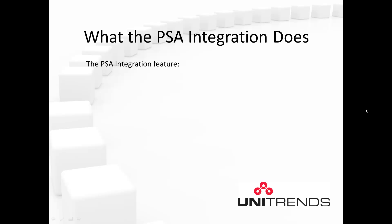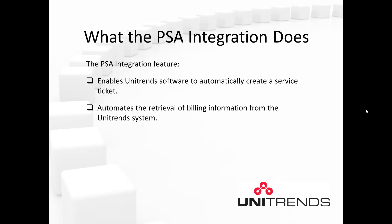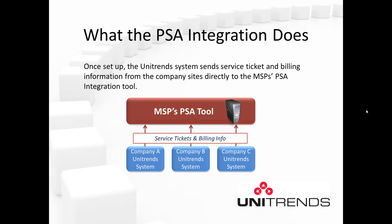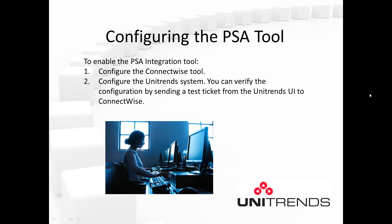Note that billing tickets show up as service tickets in the PSA tool and contain information required for billing. The PSA integration feature enables Unitrends software to automatically create a service ticket and automates the retrieval of billing information from the Unitrends system. Once set up, the Unitrends system sends service ticket and billing information from the company's sites directly to the MSP's PSA integration tool. Enabling the PSA integration is two steps: first, configure the ConnectWise tool; second, configure the Unitrends system. You can verify the configuration by sending a test ticket from the Unitrends UI to ConnectWise.